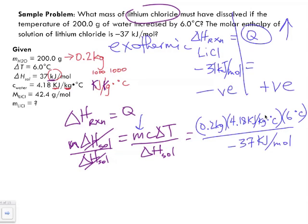I like to include units to figure out what the units of my final answer will be. Because we are trying to find n (number of moles), we cannot have a negative value. Our answer as set up would give a negative value, so we're going to ignore the negative sign.